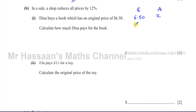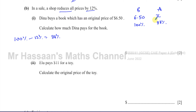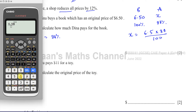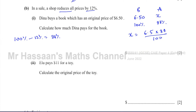The original price is always considered 100%. The price is reduced by 12%, so the new price is 100% − 12% = 88%. Therefore x = 6.50 × 88 ÷ 100. That gives us the answer: $5.72. That's how much Dina paid for the book.